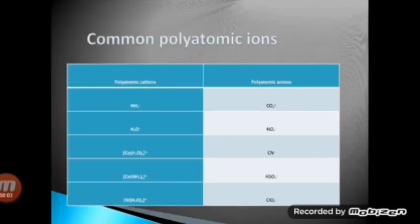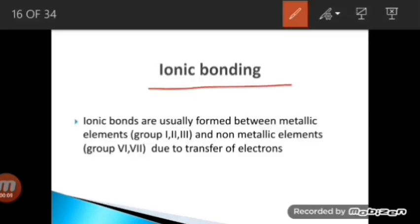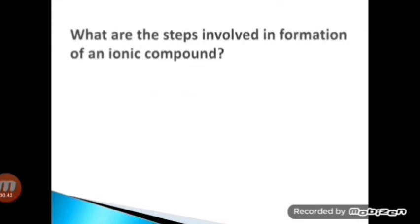These are some common polyatomic ions. Ionic bonding is basically an electrostatic force of attraction — a force produced due to charges — between a metal and a non-metal by the transfer of valence electrons. An ionic bond is produced between a cation and an anion. All compounds possessing ionic bonding are called ionic compounds.